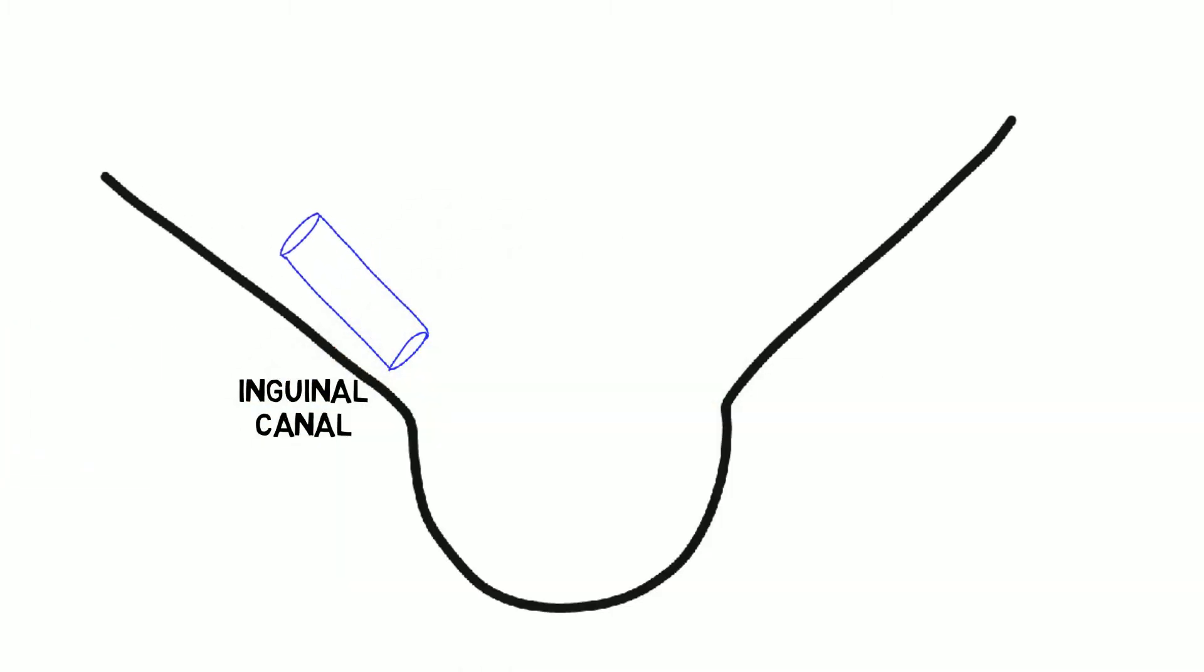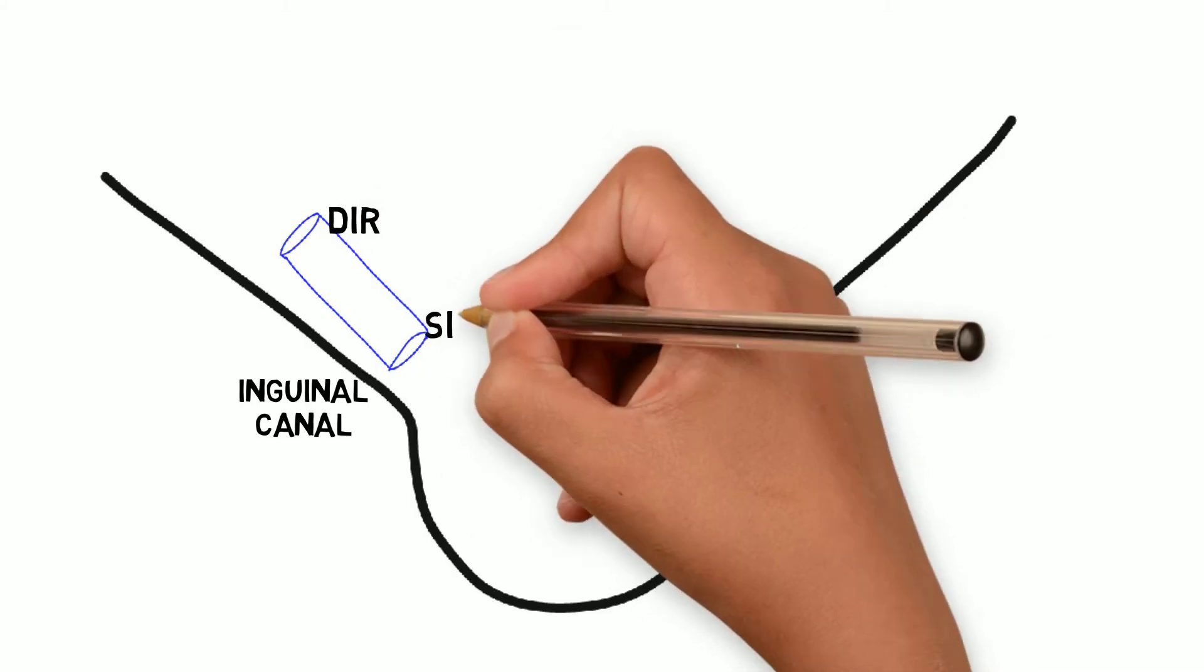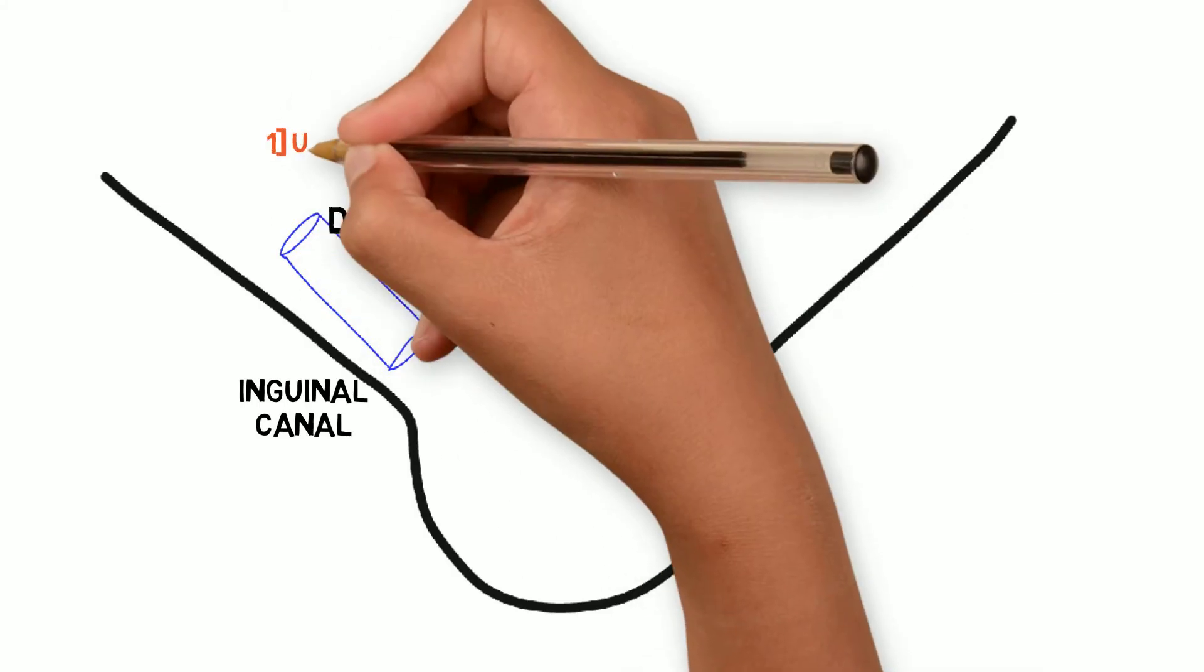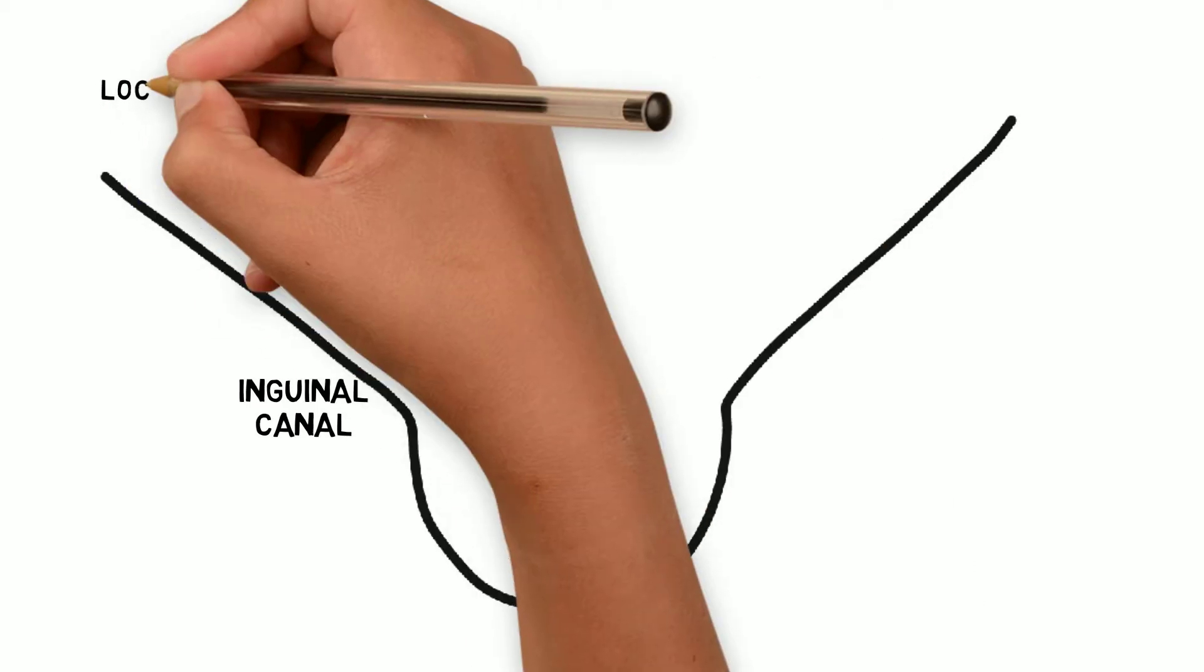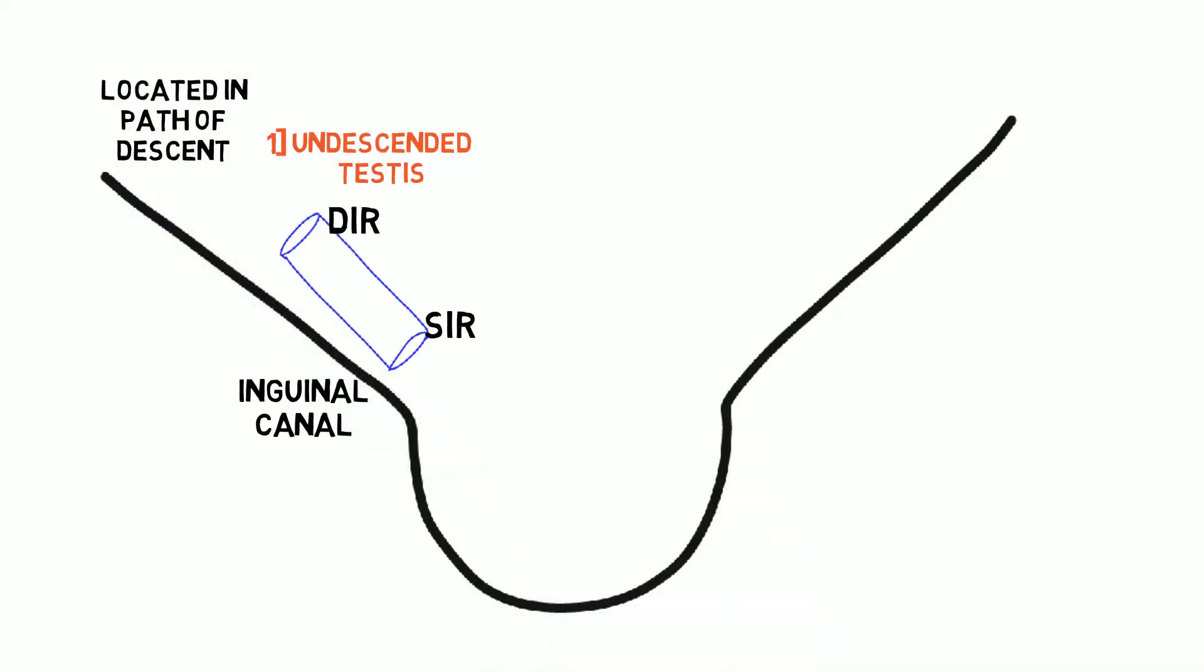Here this is the inguinal canal, deep inguinal ring, and superficial inguinal ring. The first cause is undescended testis, where the testis is located along the path of its descent.